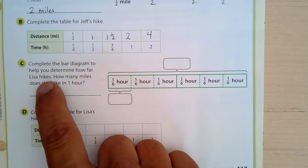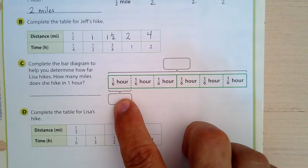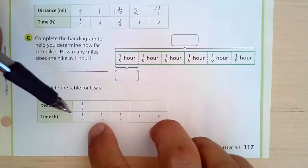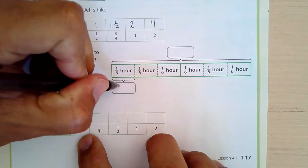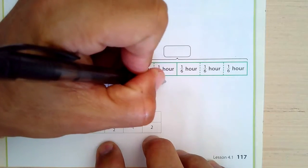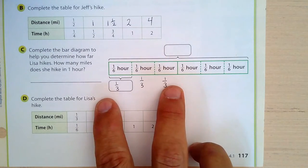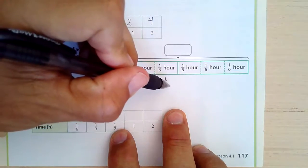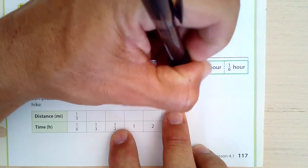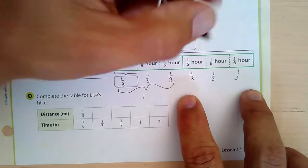Now for Lisa's bar diagram: in one-sixth of an hour she travels one-third of a mile, as shown. Each segment is one-third, so one-third, two-thirds, three-thirds equals one mile. Then another one-third, one-third, one-third, one-third — that's another mile. So Lisa travels two miles in one hour as well.